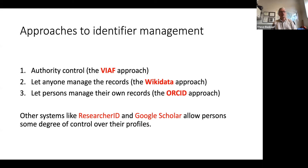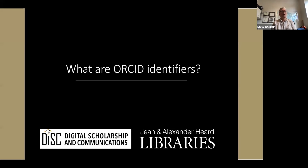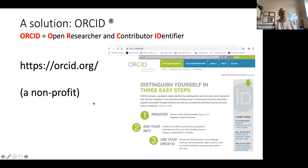There are other identifier systems like ResearcherID and Google Scholar that have varying degrees of control over records. But ORCID is the system that you can really control yourself. ORCID stands for Open Researcher and Contributor Identifier. You don't technically have to say 'ORCID identifier' since 'identifier' is already part of the acronym, but realistically people say ORCID identifier or ORCID ID, and that's fine.